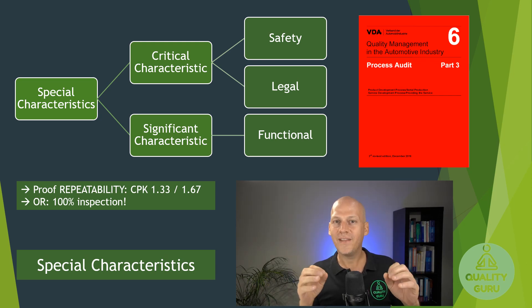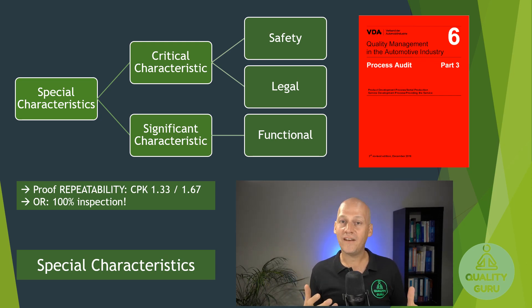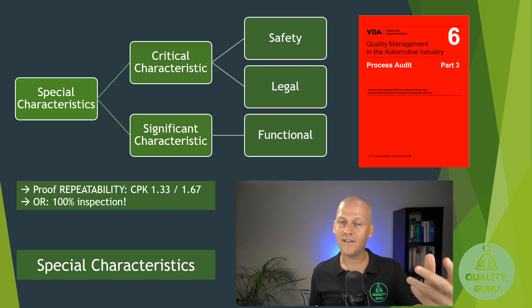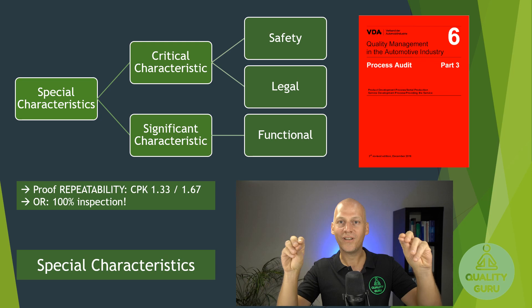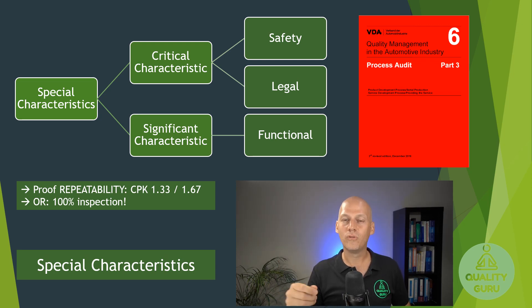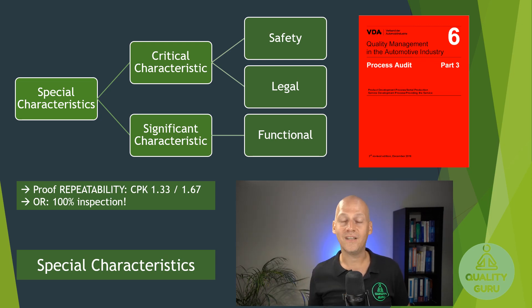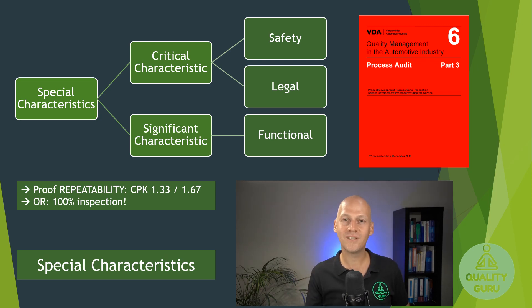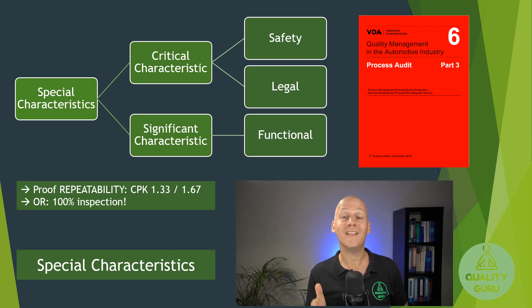Last but not least, if you don't meet the Cpk requirements of 1.33 or 1.67, then you have to install 100% inspection. Why? Because if you define that something is so important that it has severe consequences, we need to control it. We assign the CC and SC, communicate to the organization at each level — in the design, in the plant, in the production — that this is important. Then we prove with process stability evidence that everything is okay, or if we cannot trust our process, we do 100% inspection.